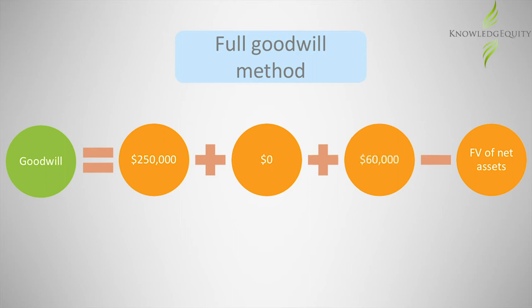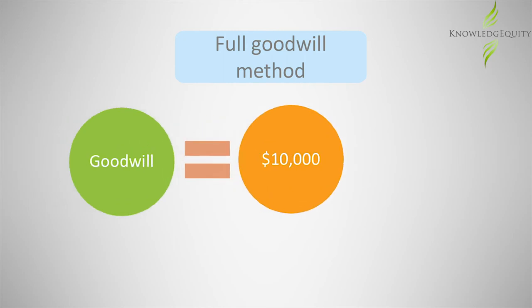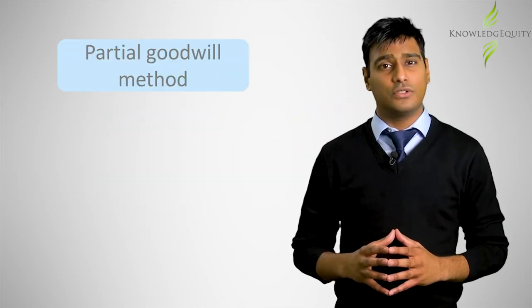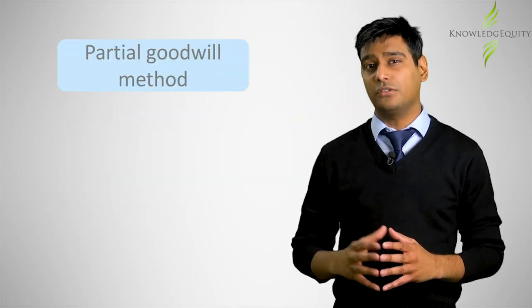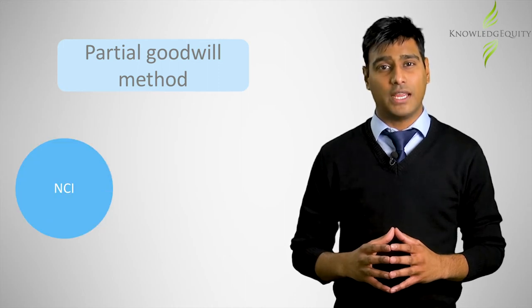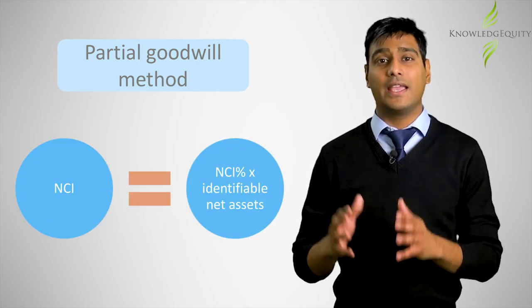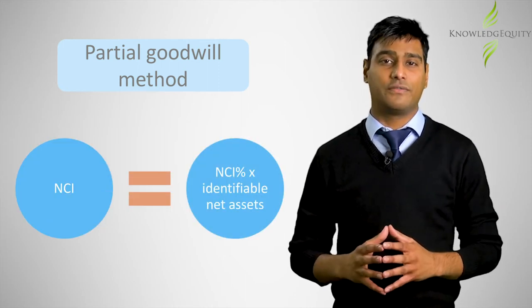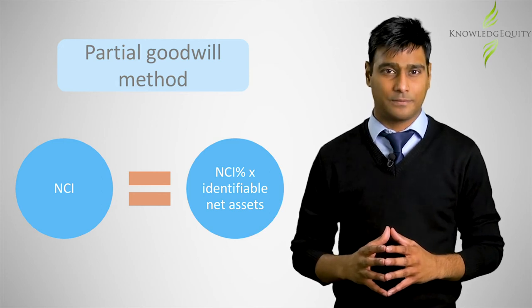The fair value of the identifiable net assets is equal to $300,000. Therefore, goodwill will be $10,000. If an entity chooses the partial goodwill method, then it would measure non-controlling interest as the NCI percentage of the identifiable net assets.